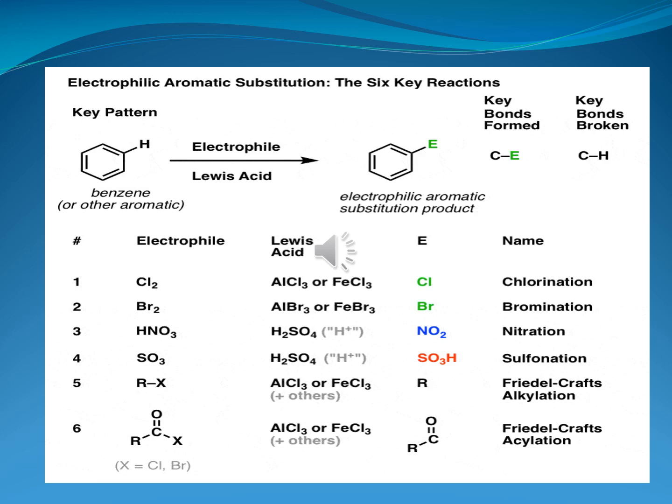In this table you can see the six key reactions of electrophilic aromatic substitution, in which we can observe the key pattern of benzene molecule with the electrophiles. The benzene molecule is treated with an electrophile in the presence of Lewis acids, and we obtain an electrophilic aromatic substitution product, in which the key bond formed is the carbon-electrophile bond and the key bond broken is the carbon-hydrogen bond.